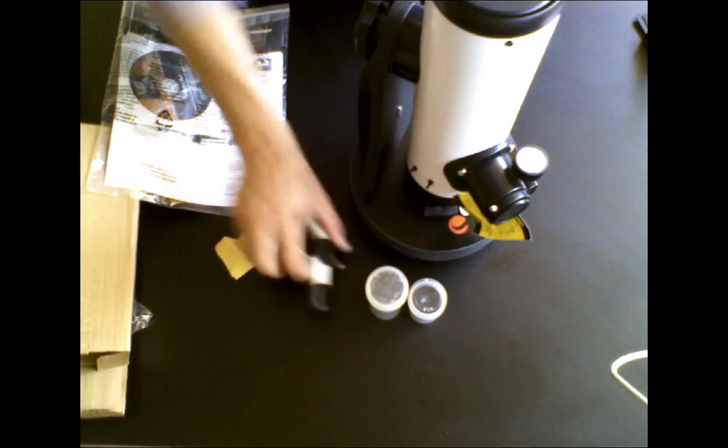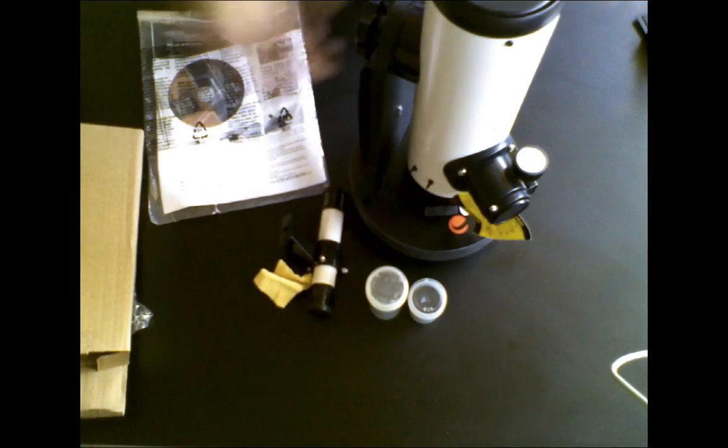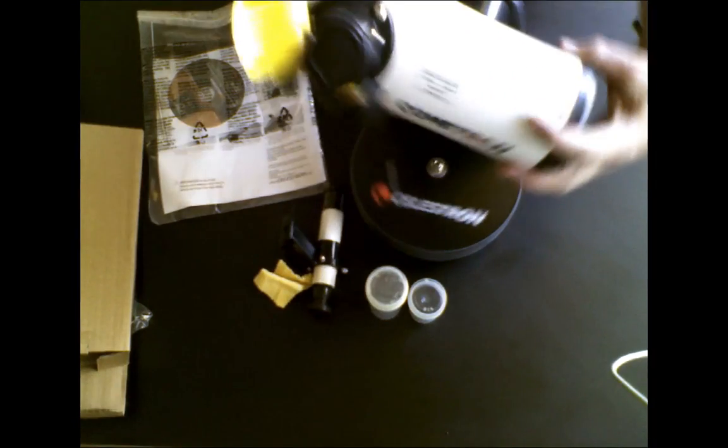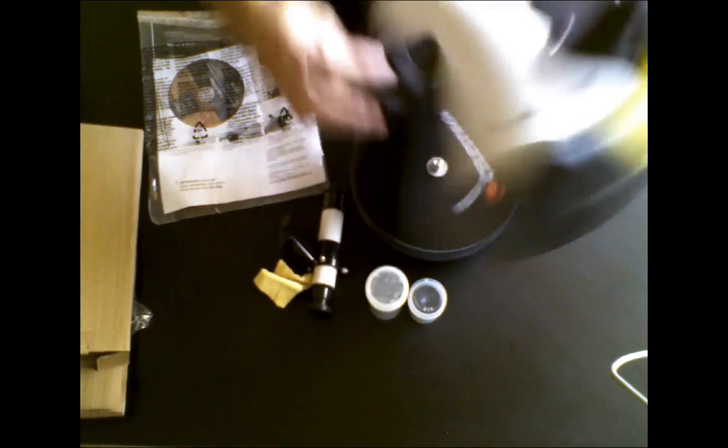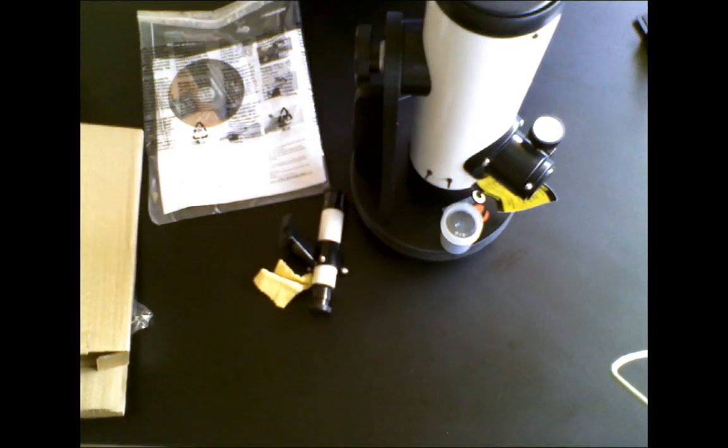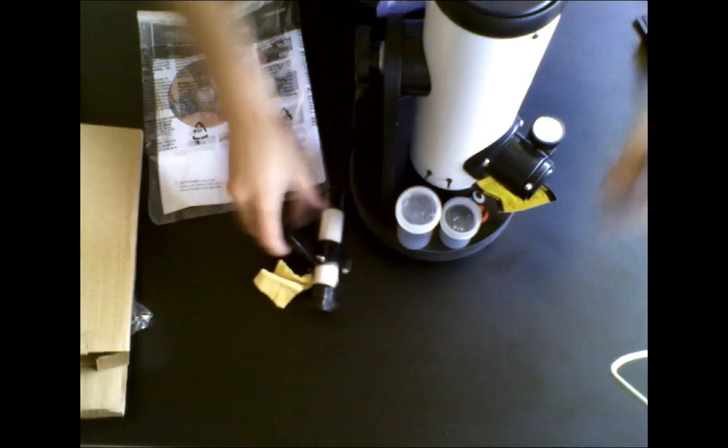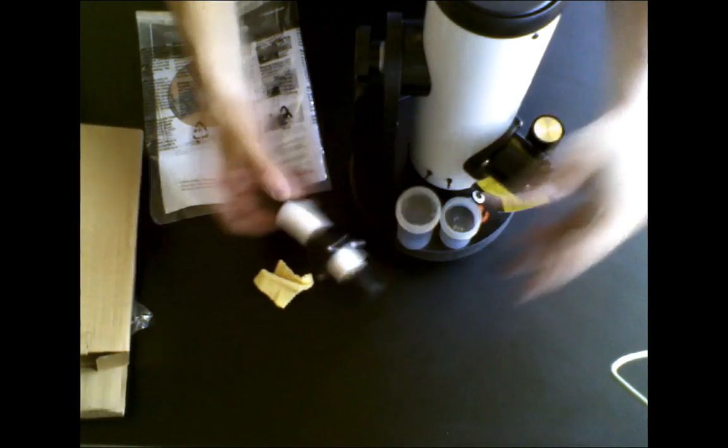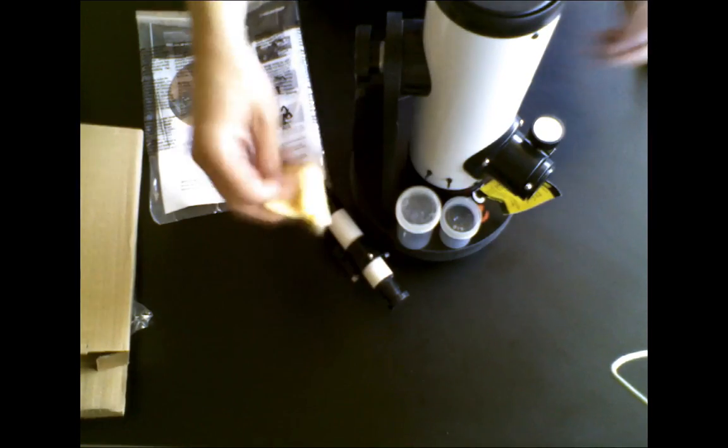Okay, so what you've got going on here is you've got your main telescope. I'll explain more about that later. You've got your two eyepieces here, one, two, you've got a viewfinder, and you've got a little lens cloth.